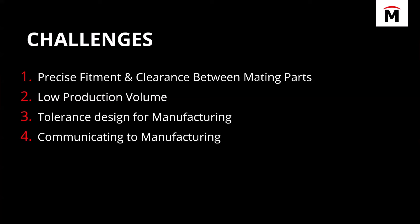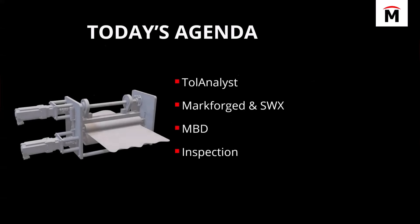The next thing we're going to look at is tolerancing for design for manufacturing — how can we leverage our CAD to alter our design? And then ultimately, a big part of using GD&T information is communicating that to the manufacturing team — the people inspecting the parts, machining it, or laying out the tool paths. We'll cover four tools: the tolerance analyst tool for tolerance stack-up analysis, SolidWorks and MarkForge for low production volumes with 3D printing, and model-based definition to give users a better format to digest GD&T information.